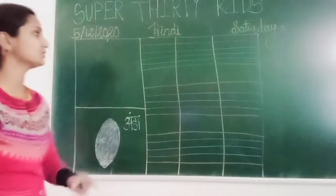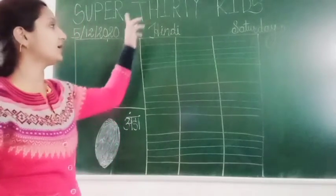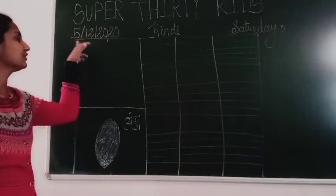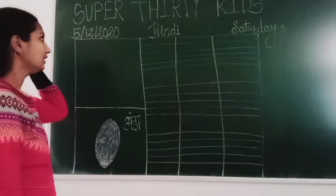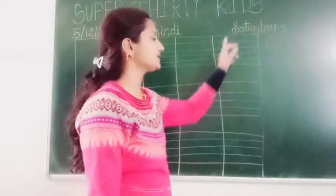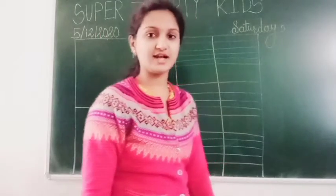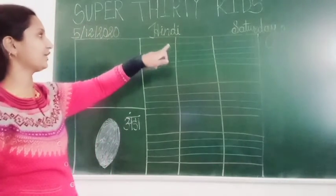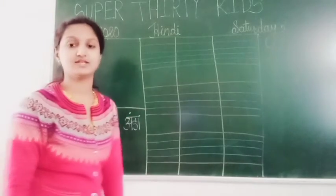First, let's see our school name. What is our school name, students? Super 30 kids. And what is the day today? Today is 5th December 2020. And what is the day? Today is Saturday - S-A-T-U-R-D-A-Y, Saturday. And which subject? We are going to study Hindi. What is the spelling of Hindi? H-I-N-D-I, Hindi. Yes.